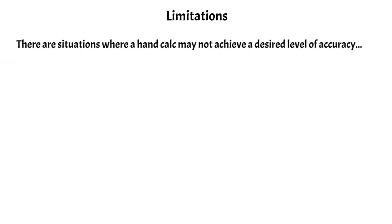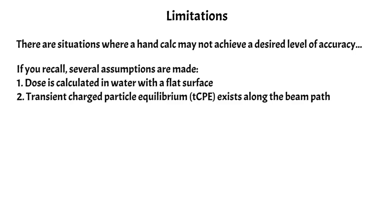There are some situations where a hand calc may not achieve a desired level of accuracy. The reasons that hand calcs break down stem from the assumptions made in a hand calc. The first is that the dose is calculated in water with a flat surface. The second is that transient charged particle equilibrium is assumed to exist along the beam path. There are numerous situations where these two assumptions are not met.